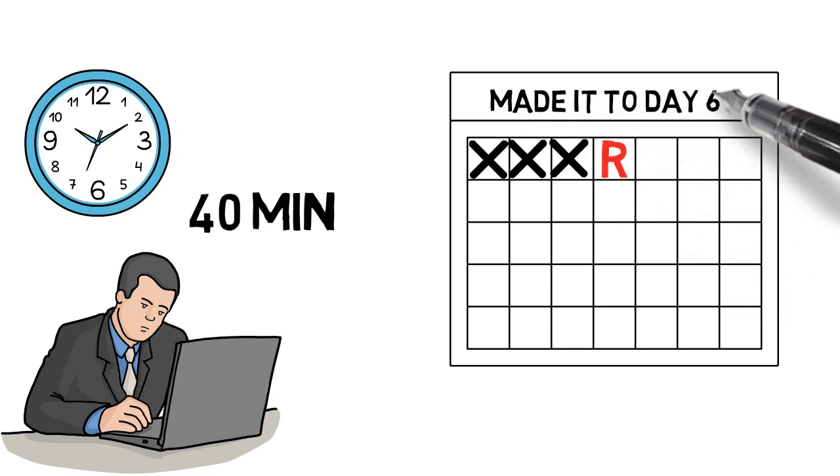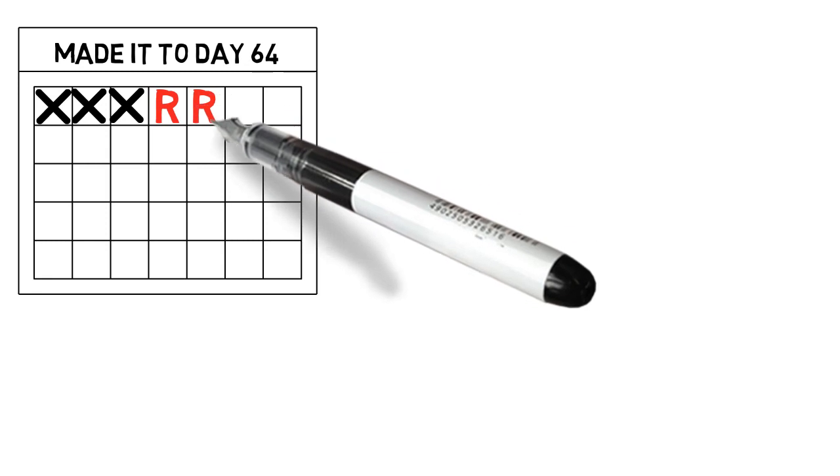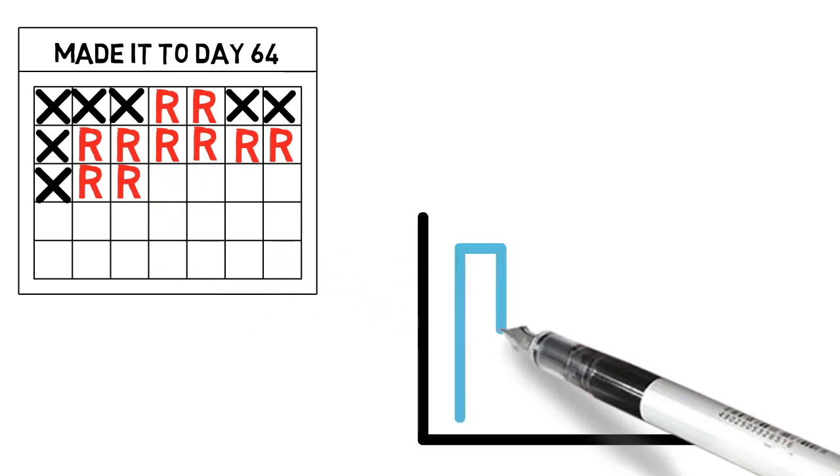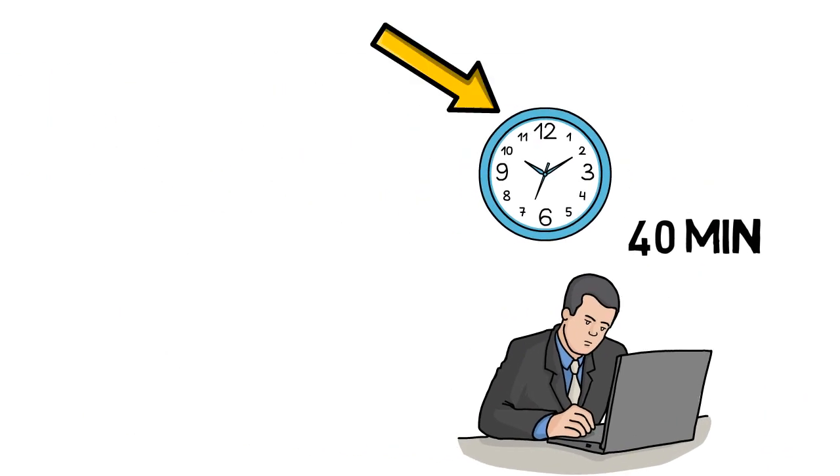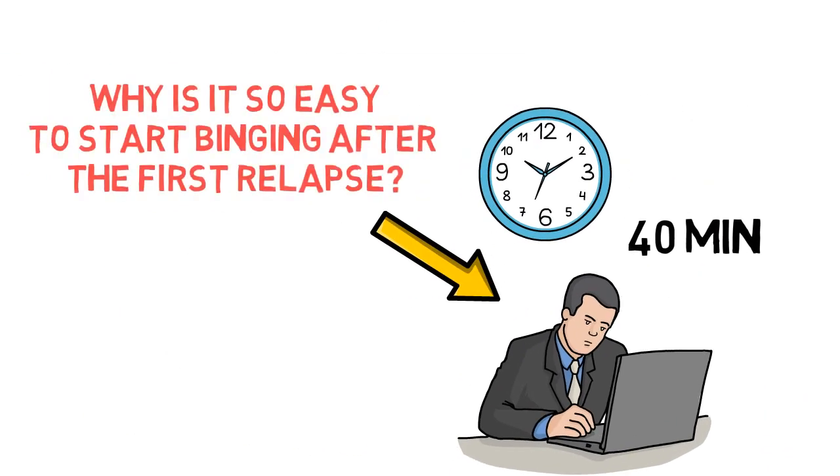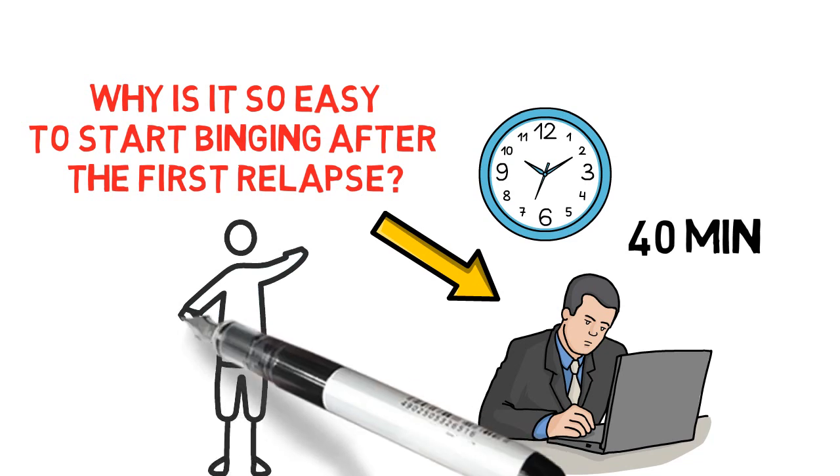But still so many guys go on full binge mode when this happens, and so they relapse again the following day and then perhaps they go super crazy with a four hour relapse four days after that, and this keeps repeating itself for several days. Well, congratulations because now you are pretty much back to zero. So, why is it so easy to start binging after the first 40 minute relapse there?